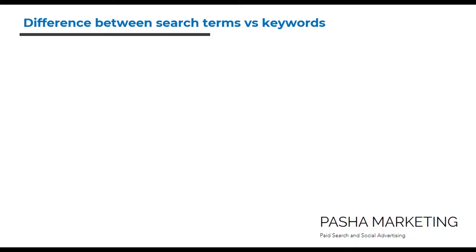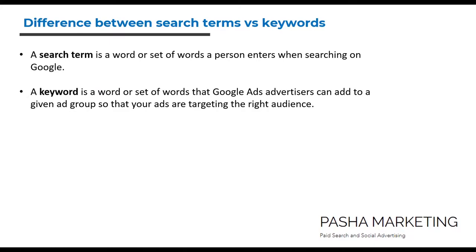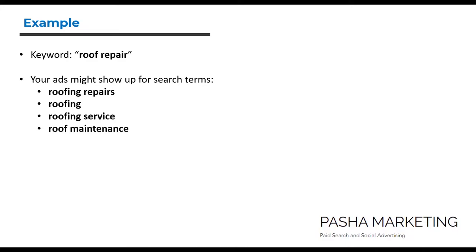Difference between search terms and keywords: A search term is a word or set of words a person enters when searching on Google. A keyword is a word or set of words that Google Ads advertisers add to a given ad group so that your ads are targeting the right audience. For example, if you have targeted the keyword 'roof repair,' your ads might show up for search terms like 'roofing repairs,' 'roofing,' 'roofing service,' or 'roof maintenance,' because they are related to the keyword you selected.